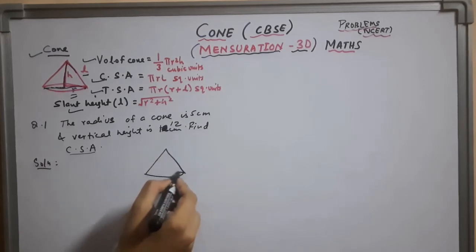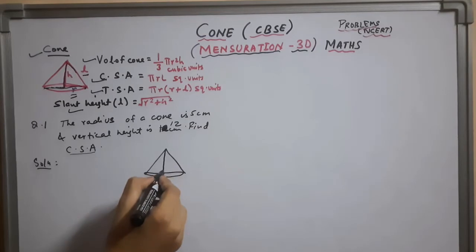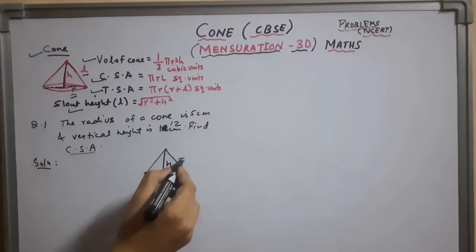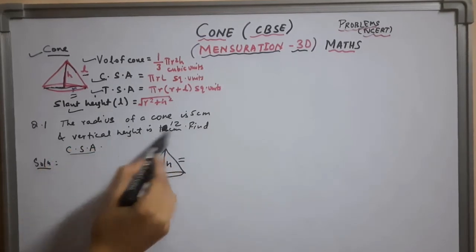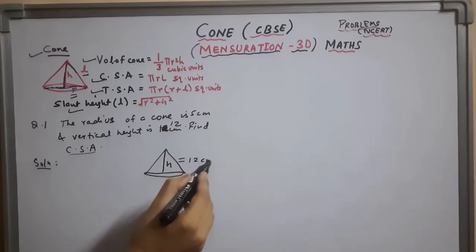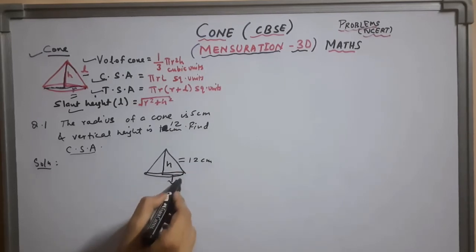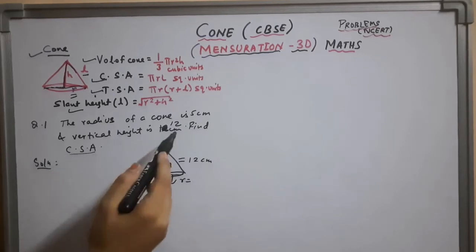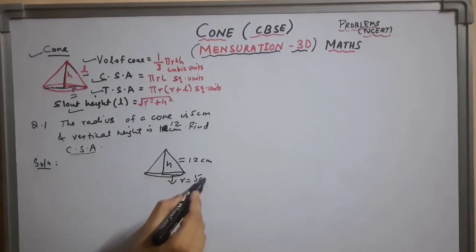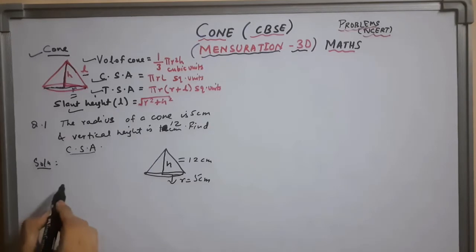This is the cone. This is the vertical height h, that is 12 cm. And the radius of the cone here r is 5 cm. And we have to find the curve surface area.